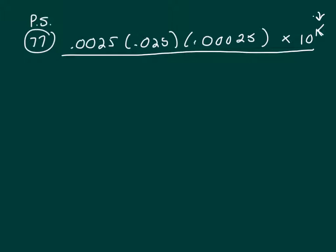Anytime you're dealing with really small or large numbers, you want to change them to scientific notation. So this first one is 25 times 10 to the negative 4.